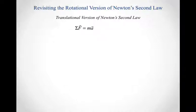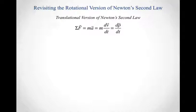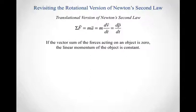Now that we've introduced linear momentum and angular momentum, let's go back and think about Newton's second law. The translational version says the net force acting on some object equals mass times acceleration. The acceleration is just the derivative with respect to time of the velocity vector, and pulling the mass term in, we get the derivative of the linear momentum with respect to time. So Newton's second law tells us that if the vector sum of forces acting on the object is zero, the linear momentum doesn't change — it's constant with respect to time.